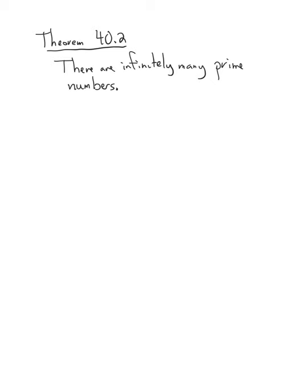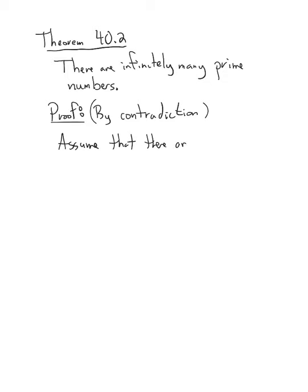And again, it's by contradiction. So what we're going to do is we're going to assume the opposite. So assume that there are finitely many prime numbers.